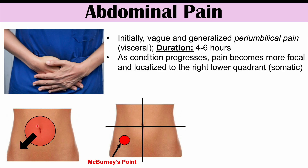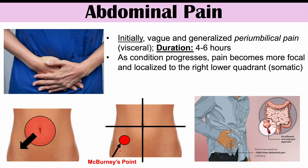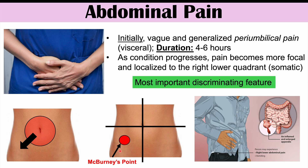Overall, we're going to get this vague generalized pain in and around the belly button that starts to shift down and to the right, becoming a pinpoint pain at McBurney's point. At first, the patient won't be able to describe where the pain is located, but over hours, they will start to literally point at where the pain is. Abdominal pain is actually one of the most important discriminating features of appendicitis. The vague periumbilical pain is actually one of the very first symptoms we can see, while the focal pain in the right lower quadrant comes later.